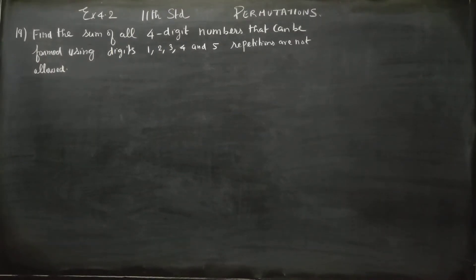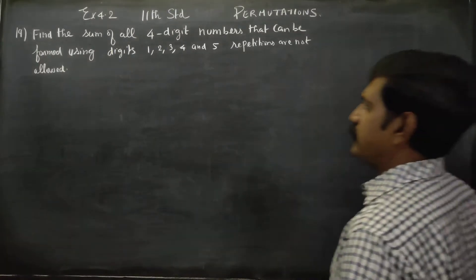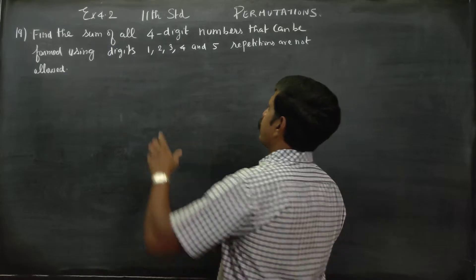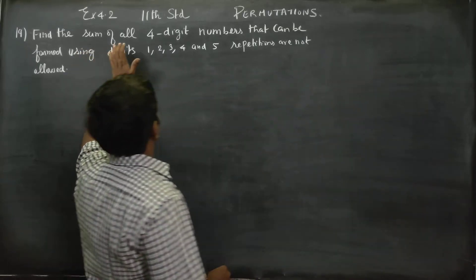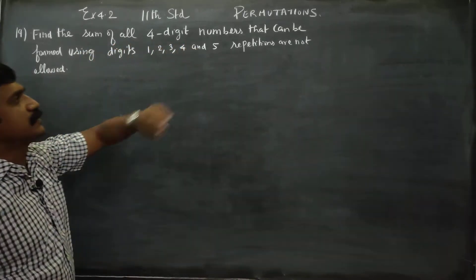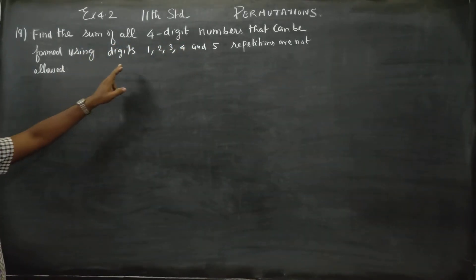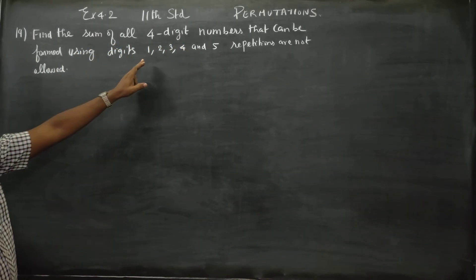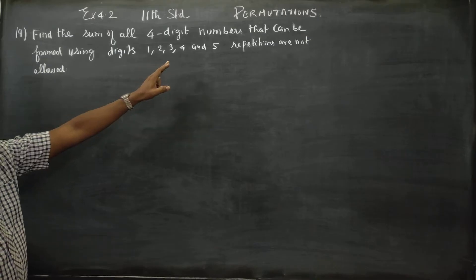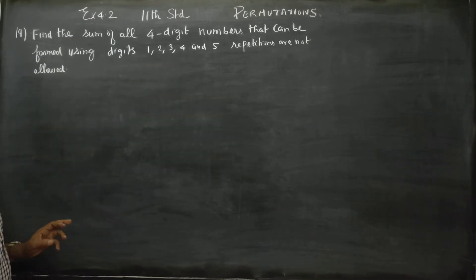Hello 11th standard students. In exercise number 4.2, sum number 19: find the sum of all 4-digit numbers that can be formed using the digits 1, 2, 3, 4, 5.